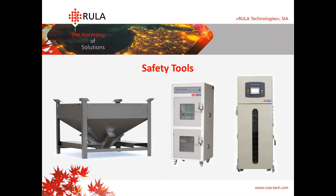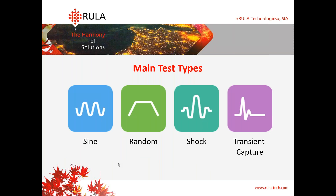Now let's talk about the test types. We have four main tests during battery testing: sine, random, shock, and transient capture. In some cases, like some inner-company standards, we can use sine-on-random tests which combine sine and random. We can also use advanced sine for speeding up the test — it is widely used in automotive, where some car manufacturers use multi-sine to speed up the test.